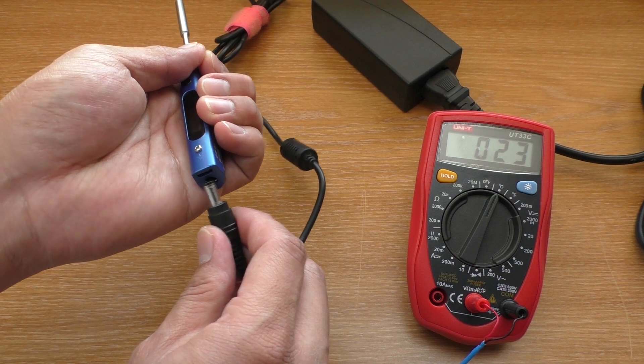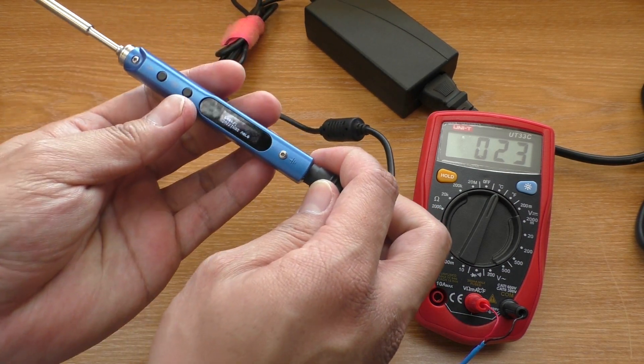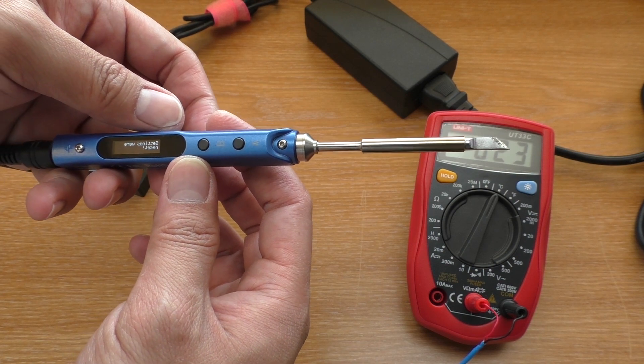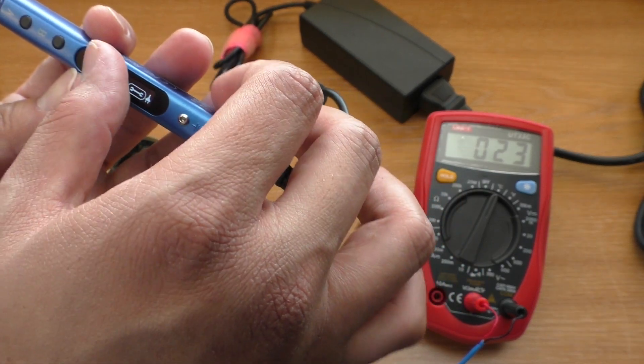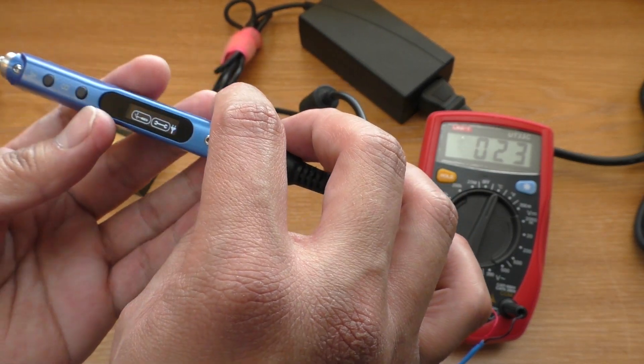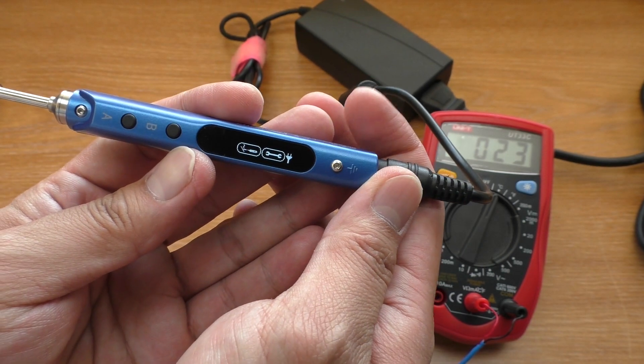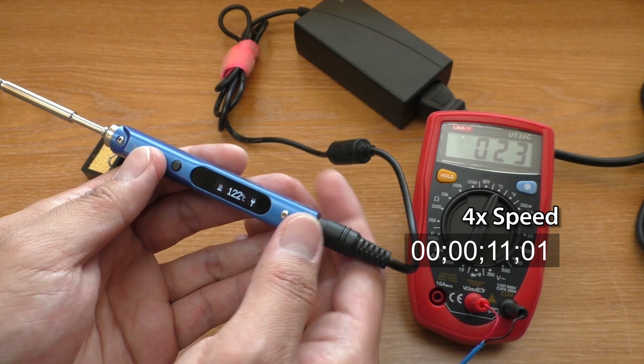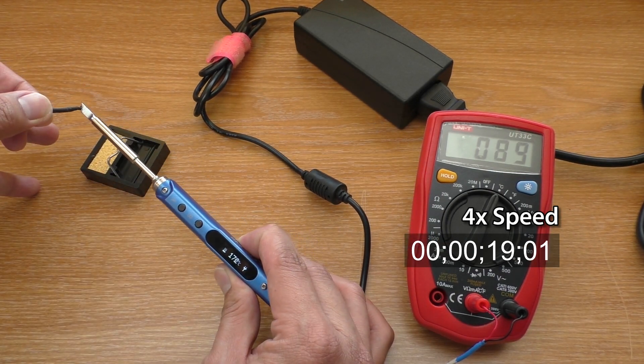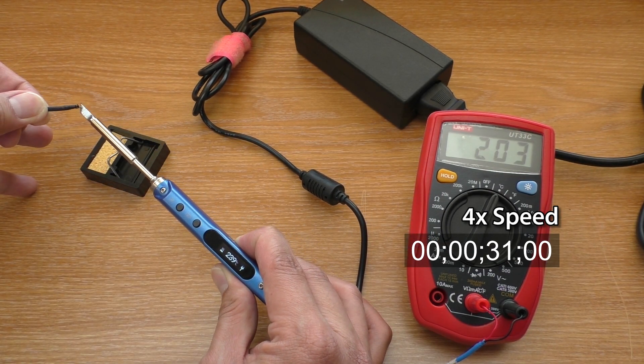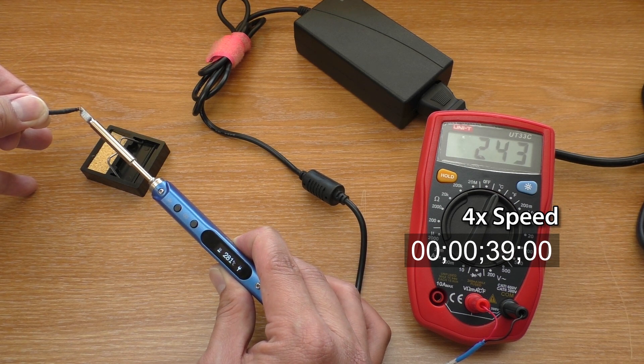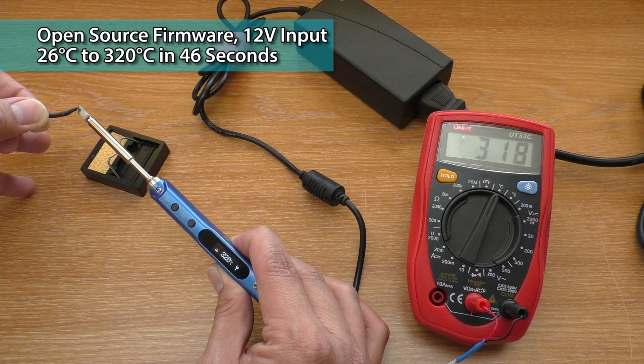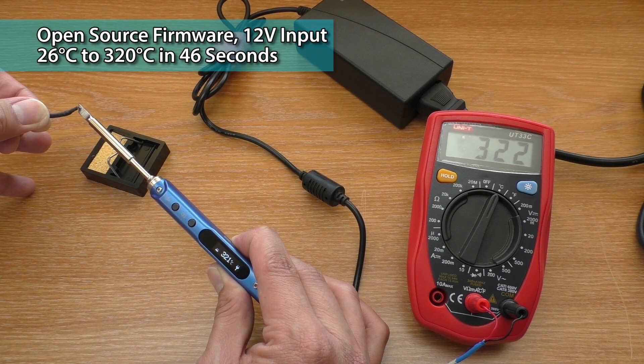Plug the power supply in and wait. It has accelerometer inside to detect movement and orientation. And here you can see the screen rotates automatically. It heats up pretty quickly even on 12V input. As you can see the temperature control is near perfect with this firmware.